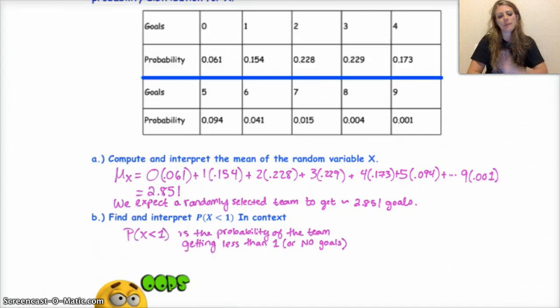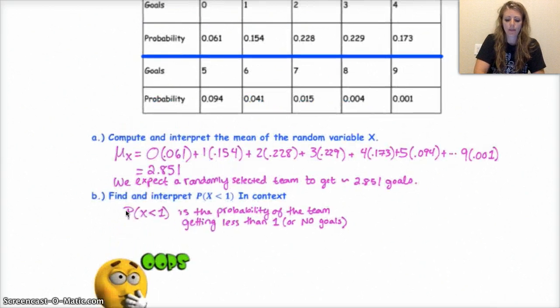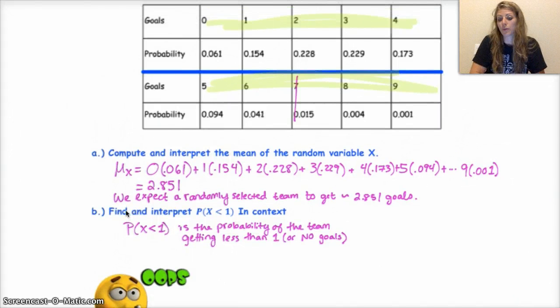Here's the solutions for you. The mean is 0 times 0.061 plus 1 times 0.154 plus 2 times 0.228 plus all the way down to 9 times 0.001. So here's your answer, your expected value is 2.851. And so the way you interpret it in context is that you say something like, you know, we expect a randomly selected team to get about 2.851 goals. So that brings me to my oopsies, because expected values are long-term behavior, it's long-run behavior. And so a lot of times students think that an expected value has to be one of the numbers that they already gave you, like 0, 1, 2, 3, 4, 5, 6, 7, 8, 9. And so they'd round that to three goals. But that's actually not the case, because it is long-run behavior. And so you actually don't want to round your expected value.